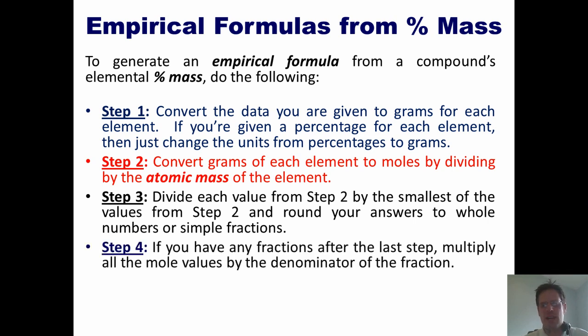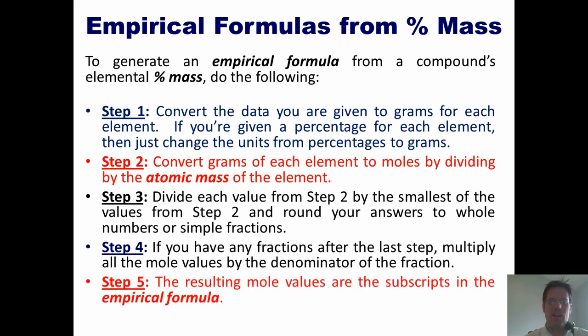Four, if you have any fractions, multiply by whatever you need to, to every single number to convert them to nice neat whole numbers. And step five, you're done. The resulting values are the subscripts in your empirical formula.